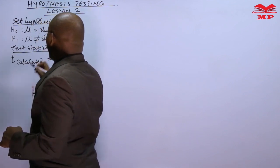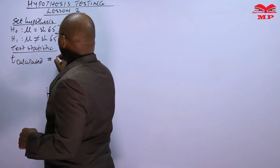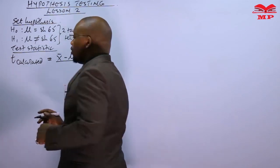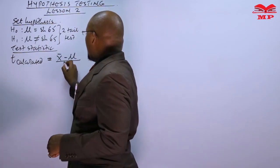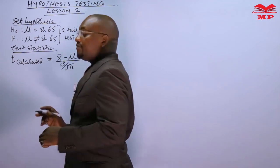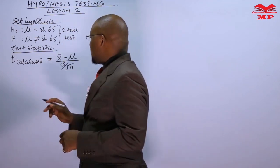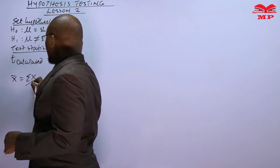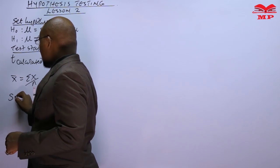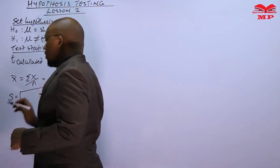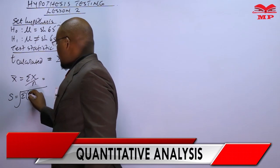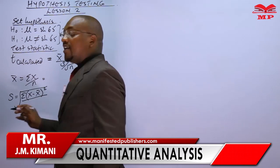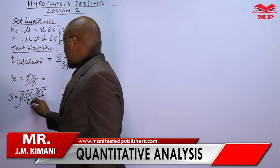The formula does not change — it is still x-bar minus the population mean, divided by s over root n. What we need to find is x-bar, which is the summation of x over n, and s, which is the square root of the summation of (x minus x-bar) squared, divided by the degrees of freedom, which is n minus 1.